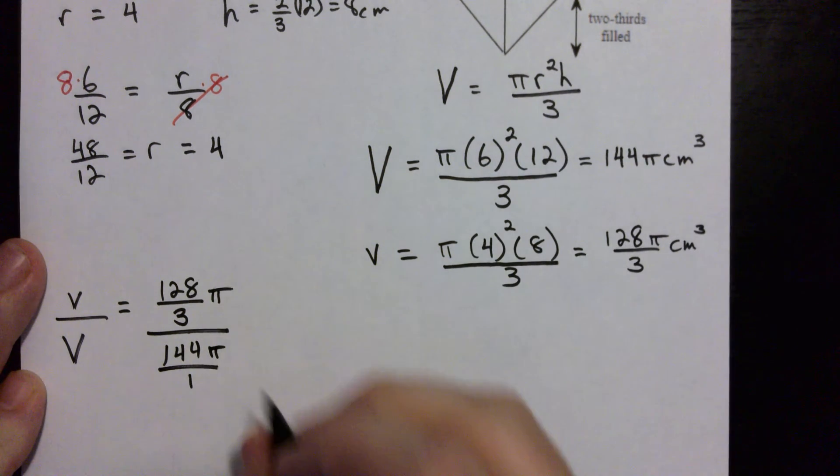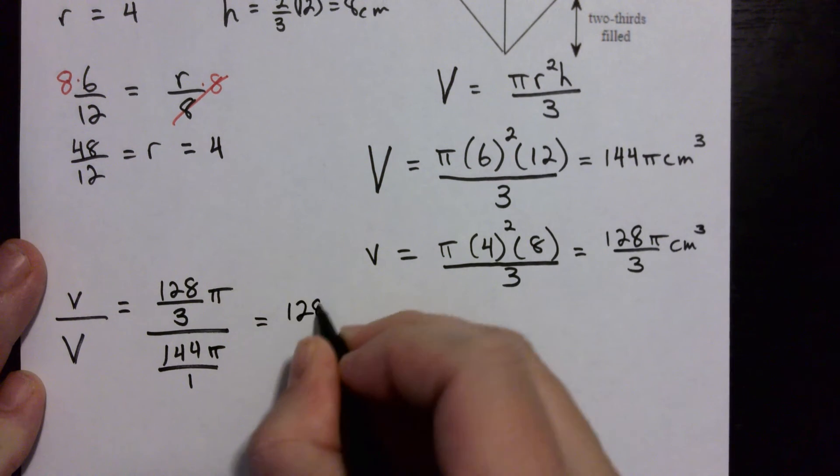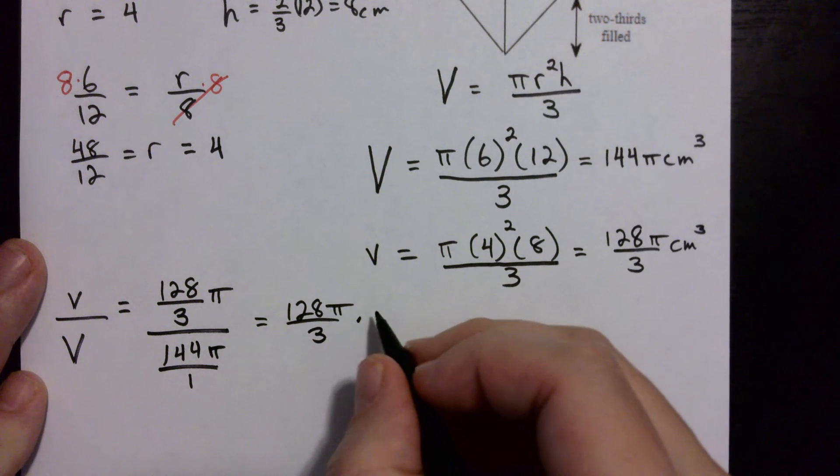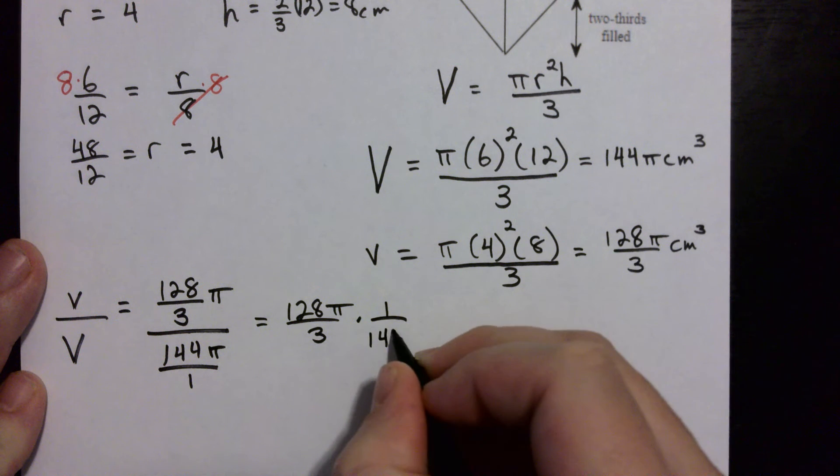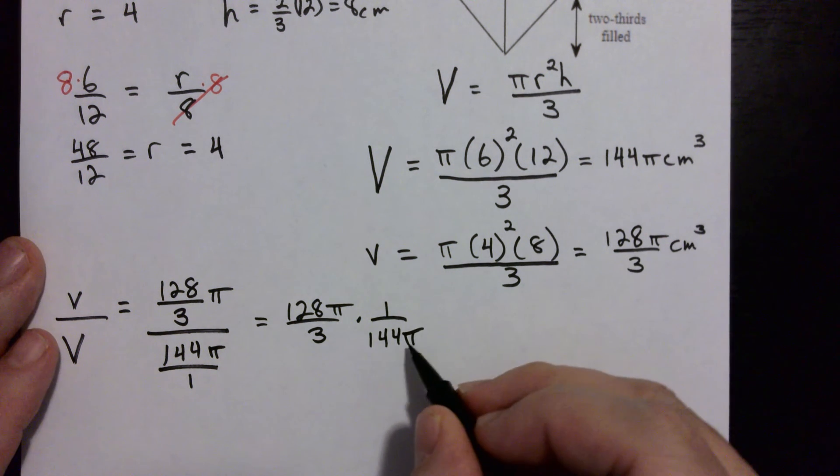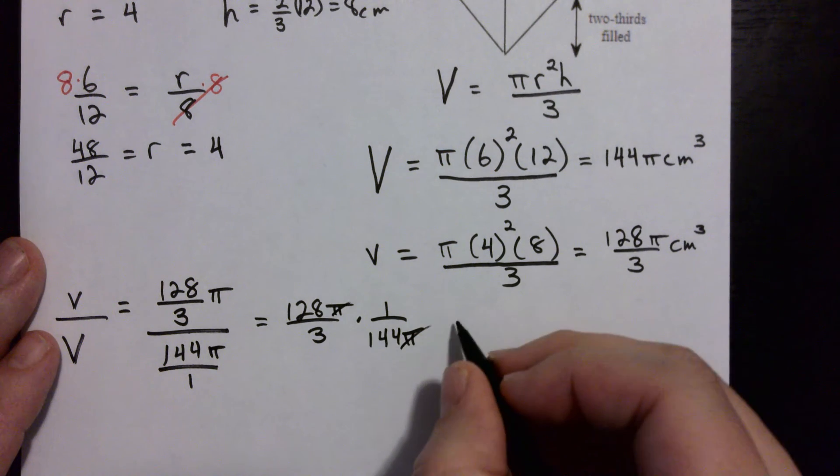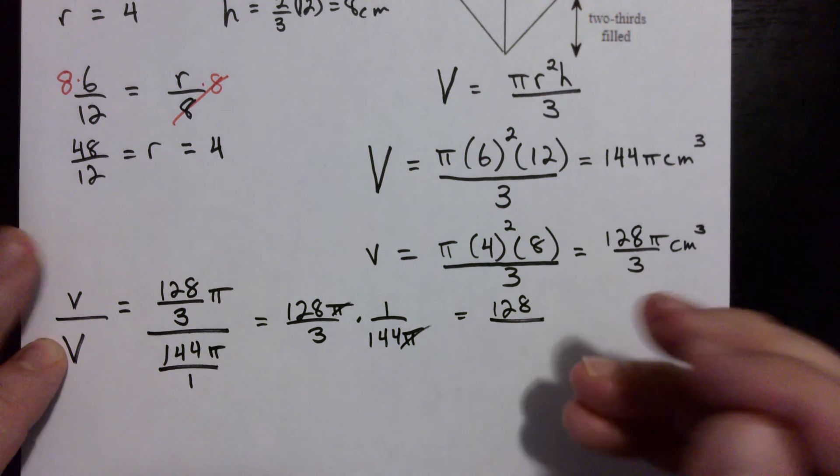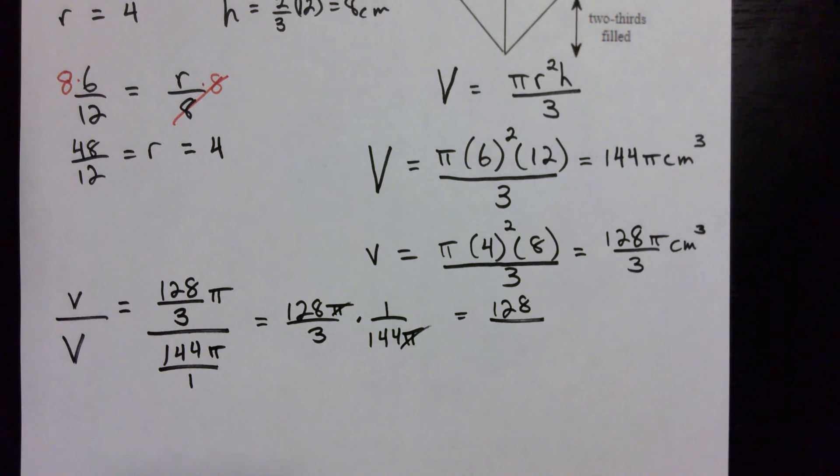So I get 128 π over 3 and I'm flipping this one, multiplying, so it becomes 1 on top and 144 π on bottom. Okay, now notice that there's a π here and a π here so they cancel, and you get 128 divided by 3 times 144 which is 432.